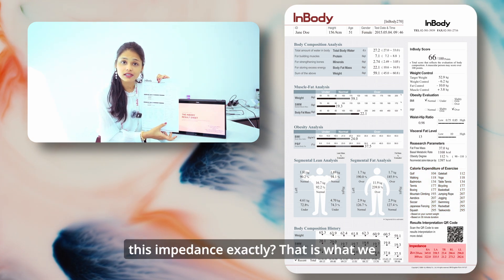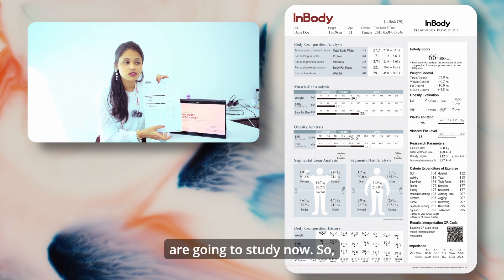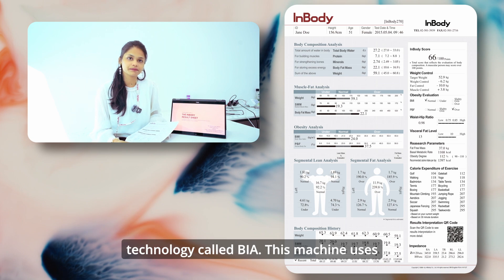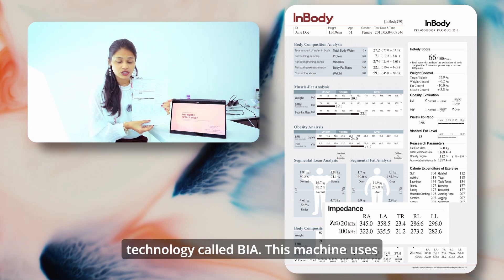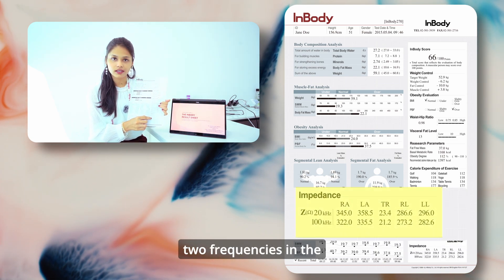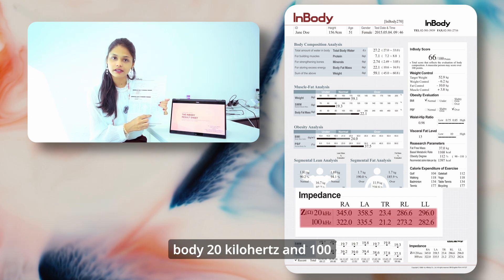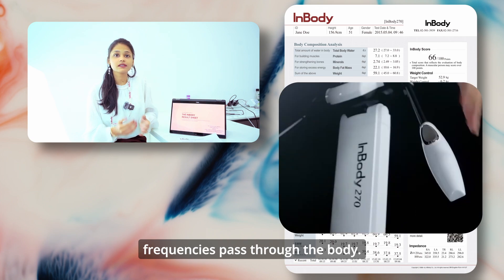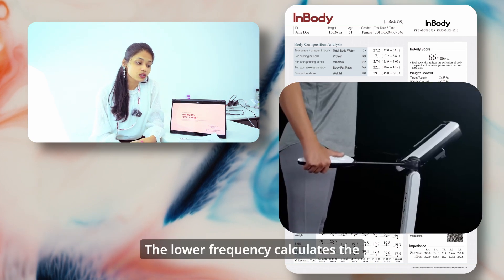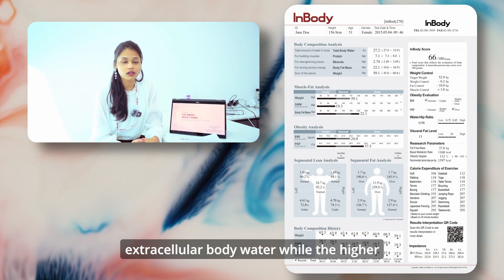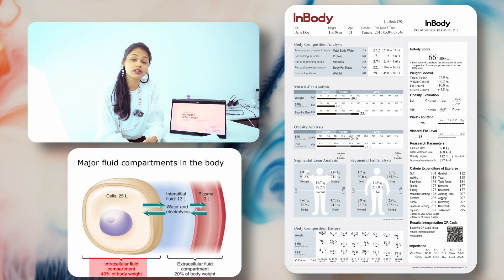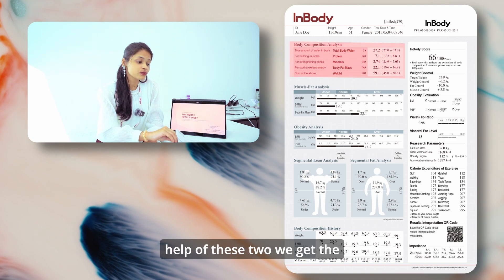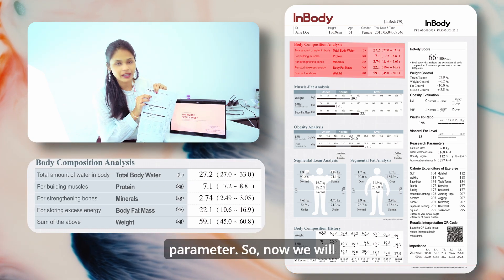So what is this impedance exactly? The InBody 270 works on a technology called BIA. This machine uses two frequencies in the body: 20 kHz and 100 kHz. When you stand on the machine, these two frequencies pass through the body. The lower frequency calculates the extracellular body water, while the higher frequency calculates both the intra and extracellular body water. Together, we get the total body water, which is our first parameter.